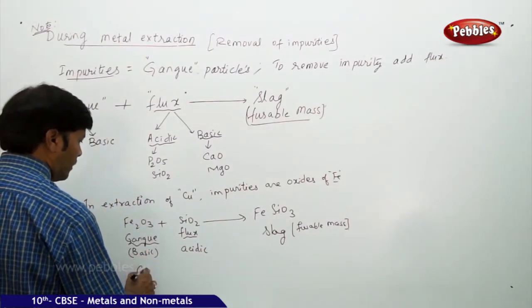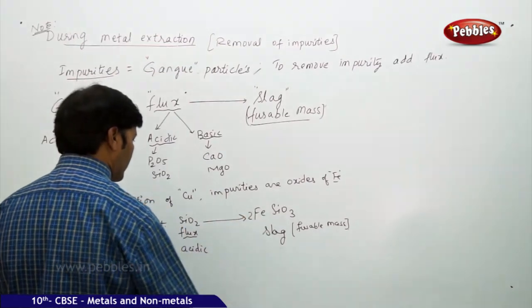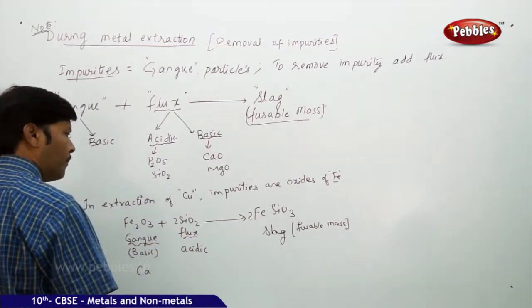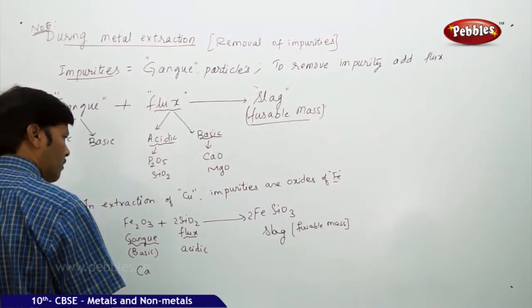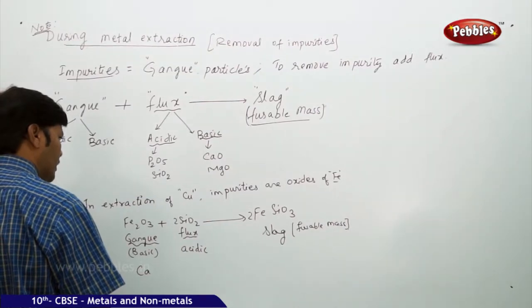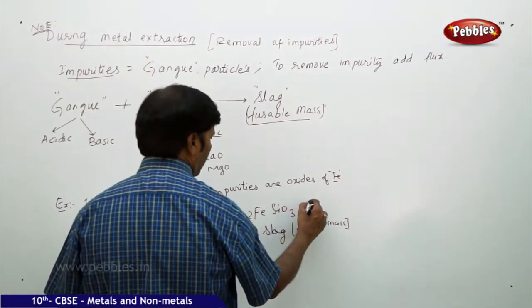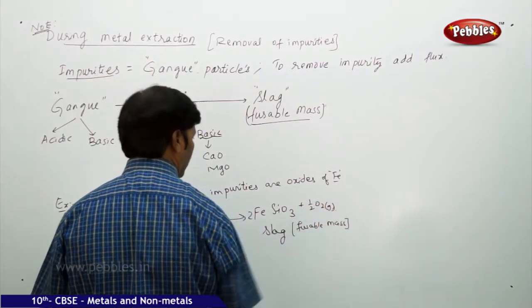Sometimes, if the gang is basic, so suppose if you balance the equation, I think if I take 2 over here, 6 plus 1, 7, might be, you can take 6 oxygens, 2 silicons, and 2 ions plus half mole of oxygen. Small amount of gas is removed out.